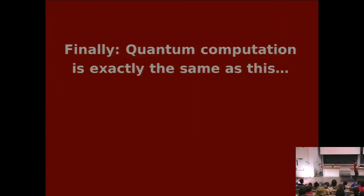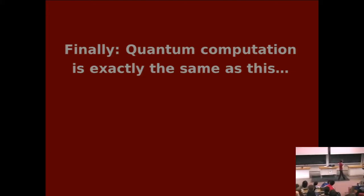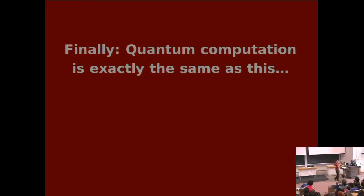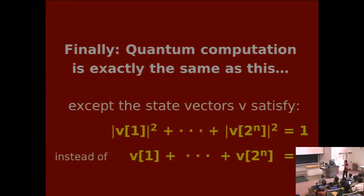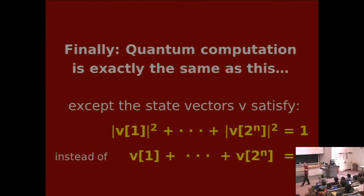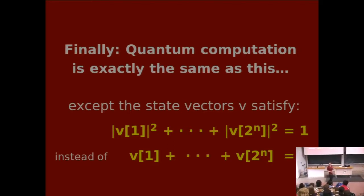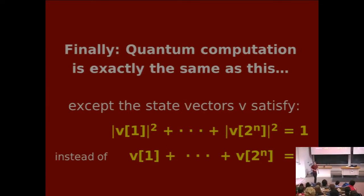So finally, quantum computation. It's exactly the same as this probabilistic computation — exactly the same. There's only one twist: the state vectors before were probability vectors, which meant their coordinates added up to 1. Quantum computation is the exact same thing, except the rule is that the sum of the squares of the coordinates adds up to 1. That's the only difference, more or less. I'll take about 20 slides to elaborate on what that means, but this is the summary: same thing, only the sum of the squares of the coordinates adds up to 1.